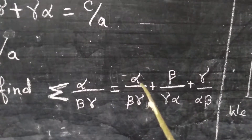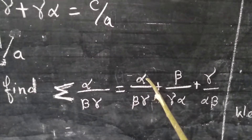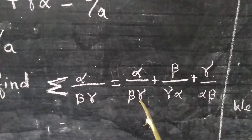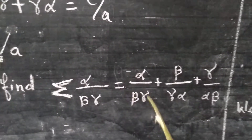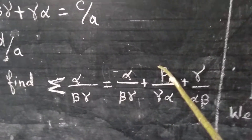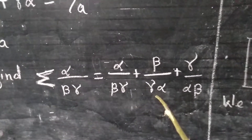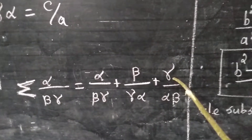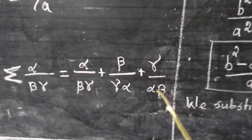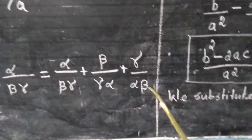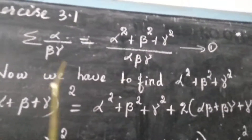That is nothing but alpha by beta gamma plus beta by gamma alpha plus gamma by alpha beta. While writing, keep in mind: when you write alpha in the numerator, alpha will not appear in the denominator — the remaining two roots will come. The same thing here: when you write beta in the numerator, beta will not come in the denominator, the other two roots come. Similarly for gamma. Now we are going to take the LCM for this expression.